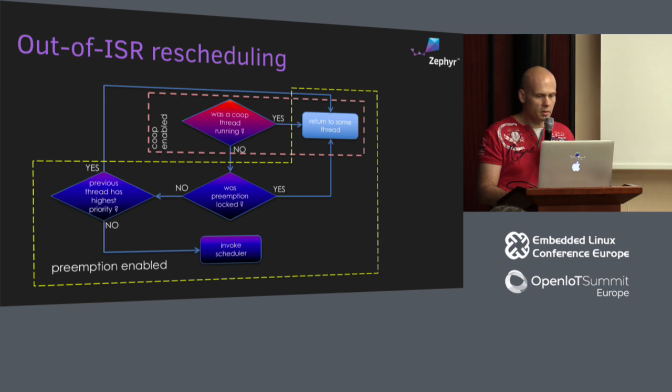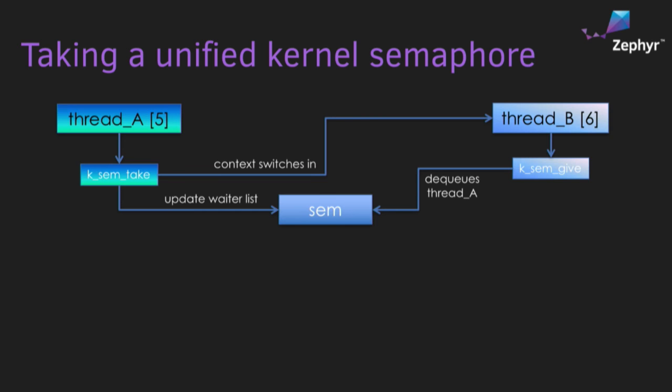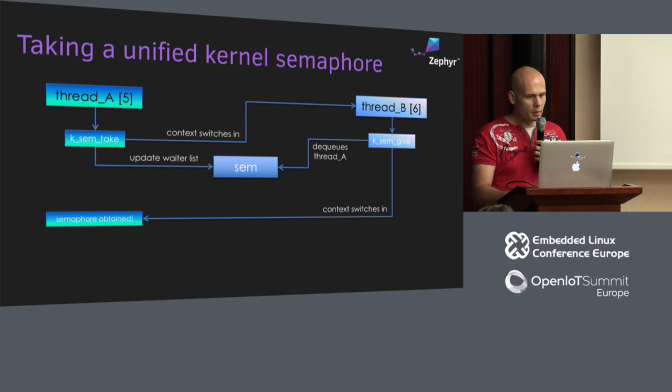This is the same semaphore example as before in the unified kernel, which becomes much more simple. Thread A wants the semaphore. The semaphore is updated — thread A waits on it. A context switch happens to thread B, which gives the semaphore. When it does that, it dequeues thread A. Thread A is higher priority, and gets the semaphore. Much more simple than before — and that's the model that people are used to.